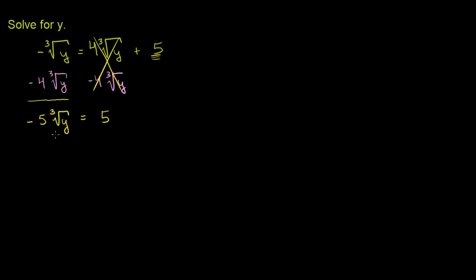So we divide both sides of this equation by negative 5. These cancel out — that was the whole point — and we are left with the cube root of y is equal to 5 divided by negative 5, which is negative 1.